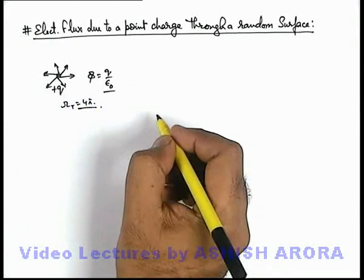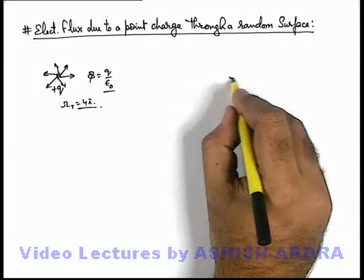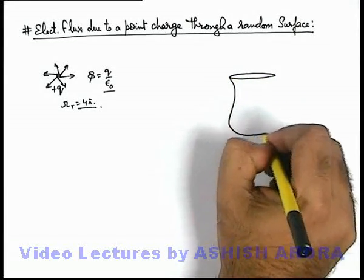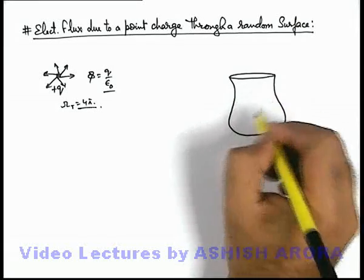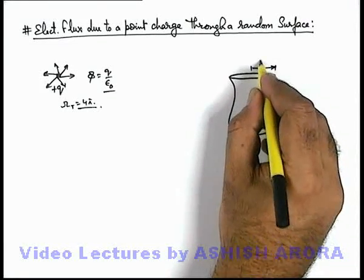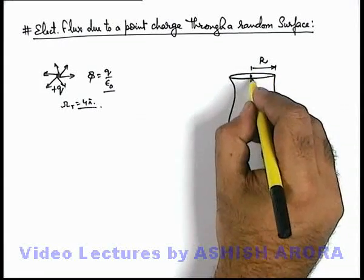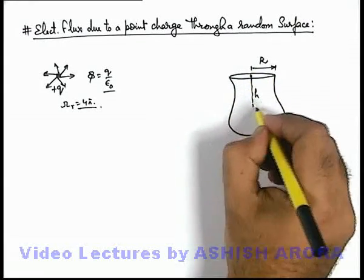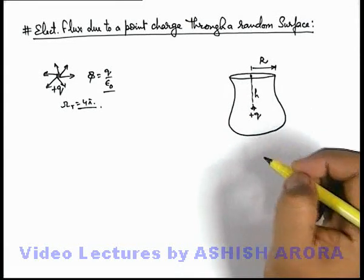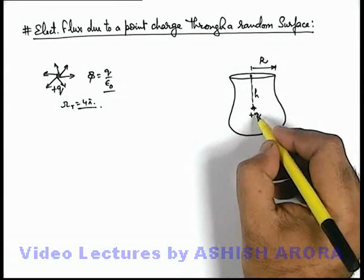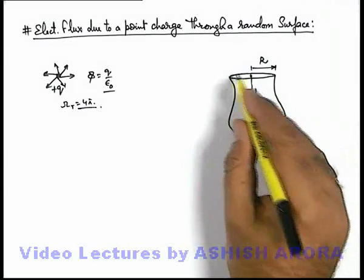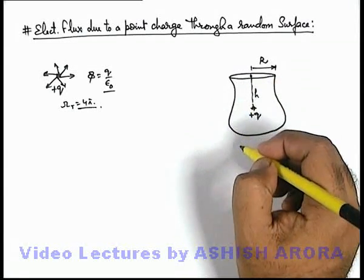This flux is distributed. Now say if we are given with a situation like this: there is a random shaped vessel of which the mouth is circular, which is of radius r, and from the centre of the mouth at a depth h we have placed a charge plus q. We are required to find the electric flux due to this plus q from the lateral surface of this vessel, except from its mouth.